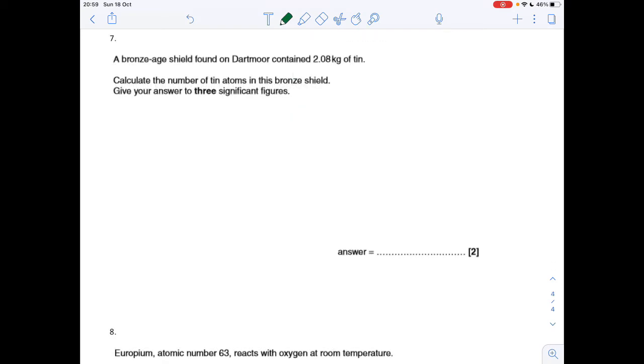Number seven: we've got this bronze age shield which contains 2.08 kilos of tin, so that needs to go into grams. Calculate the number of tin atoms in the bronze shield. First we've got to work out how many moles of tin we've got. Moles of tin is 2080 grams divided by 118.7, the MR of tin. That's 17.523 moles.